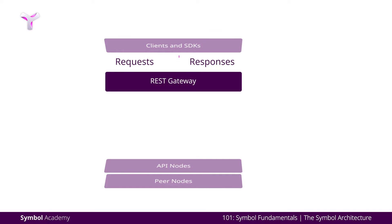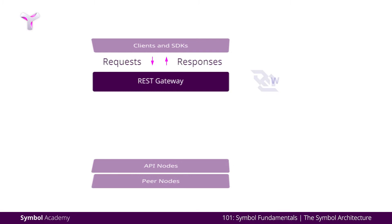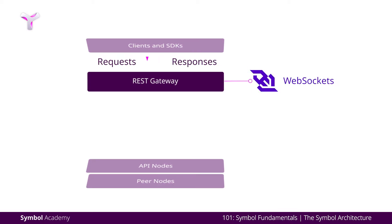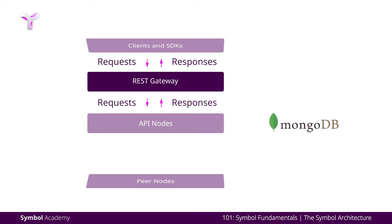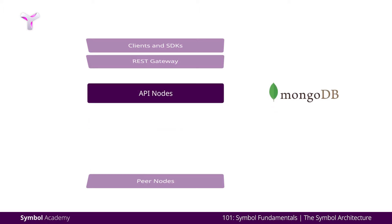REST nodes take the requests from the clients, read and write on the blockchain, and notify the clients via WebSockets. This tier exposes all the features available through a RESTful API contract. Each REST node connects to one API instance and a MongoDB database.